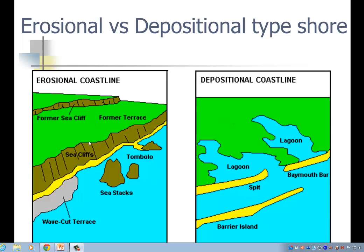If you take a look at erosional, it looks like the marine environment is actually cutting back into the geologic environment. So we're actually getting cliffs and stacks and caves and arches and tombolas. And we're getting former cliffs where we used to have a higher sea level or where land arose, with wave cut terraces at different levels.